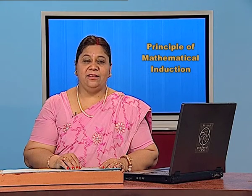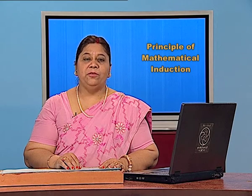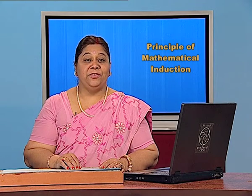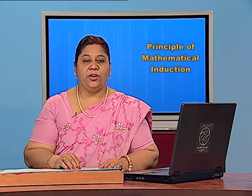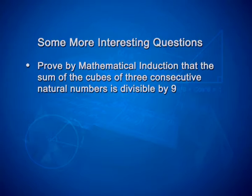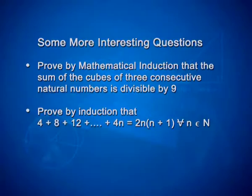So, students, we have done many questions based on inequality, divisibility, and some of the series. I hope you will be able to solve the other questions given in your textbook. Now, it is very interesting to have some challenging questions. You can take them down and try on your own. Question number 1: prove by mathematical induction that the sum of the cubes of 3 consecutive natural numbers is divisible by 9. Second challenging question: prove by induction that 4 plus 8 plus 12 plus so on plus 4n is equal to 2n into n plus 1, for every n belonging to N. This is a series which is the sum of all multiples of 4. I hope you can try and will be able to do it successfully.